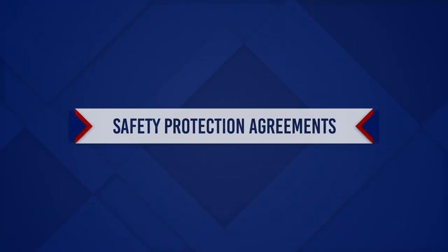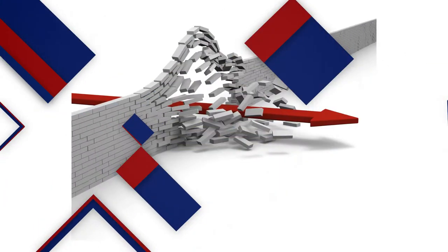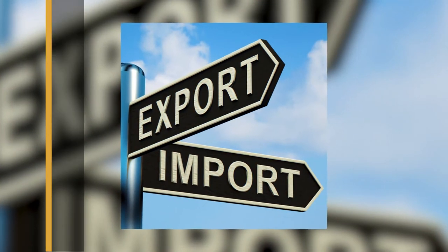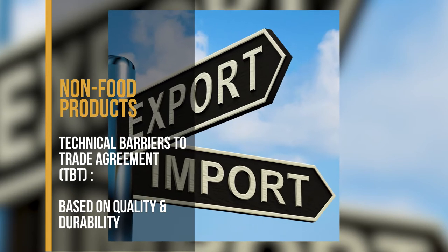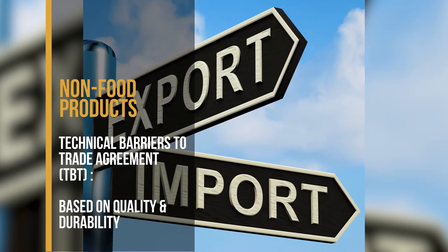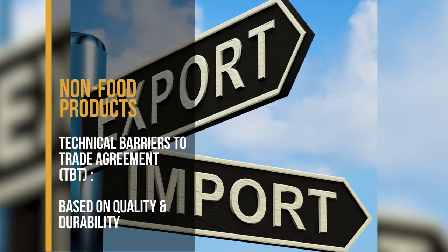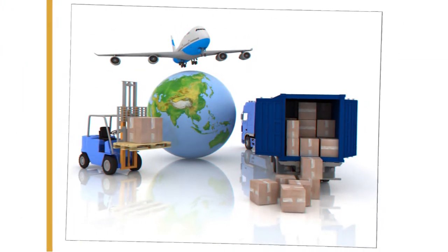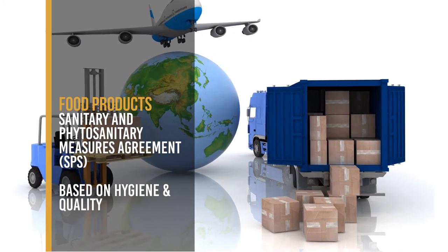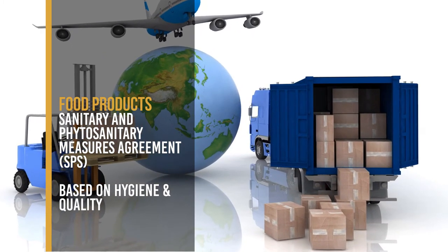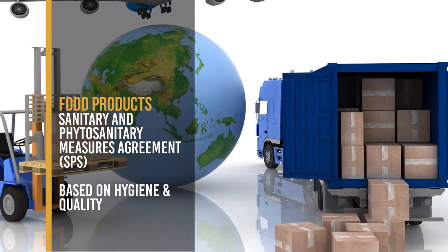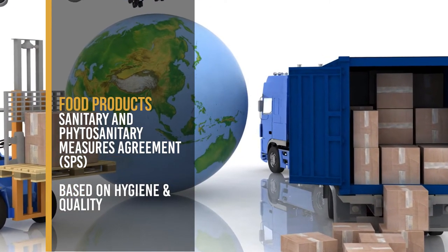There are two safety protection agreements with regards to tariff and non-tariff barriers. One is for non-food products — the Technical Barriers to Trade Agreement, also known as TBT, which is based on quality and durability. The other one is for food products — the Sanitary and Phytosanitary Measures Agreement, shortly known as SPS, which is based on hygiene and quality.